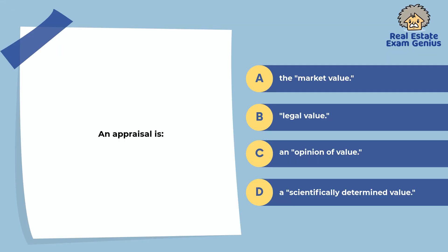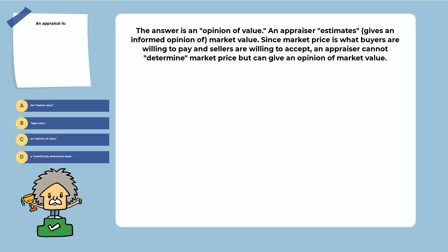An appraisal is: the market value, legal value, or an opinion of value. The answer is an opinion of value. An appraiser estimates market value. Since the market price is what buyers are willing to pay and sellers are willing to accept, an appraiser cannot determine the market price but can give an opinion of market value.